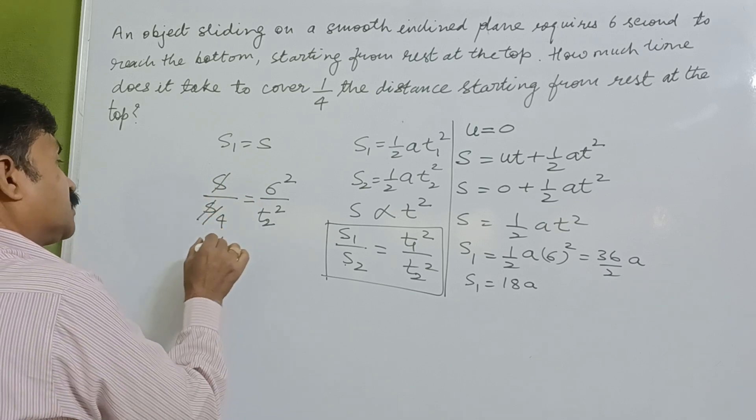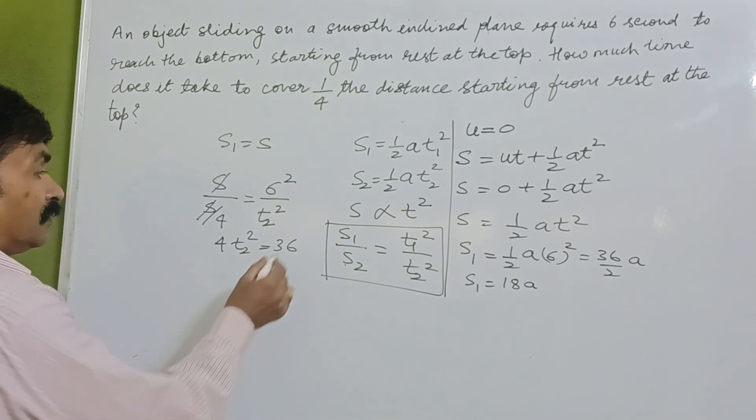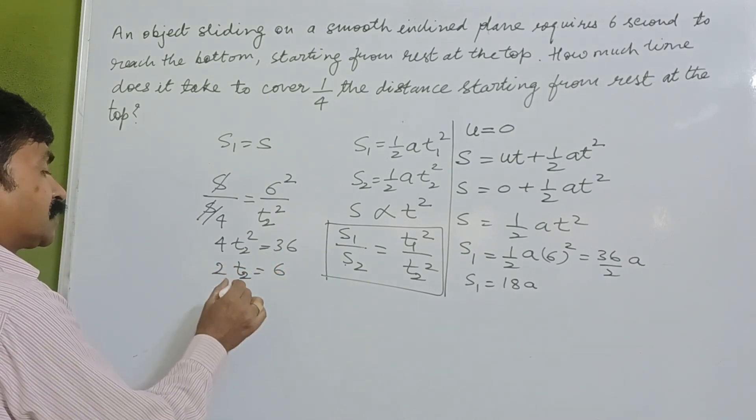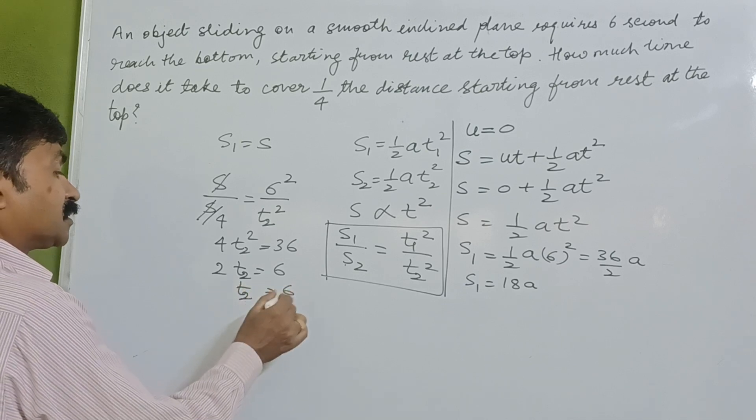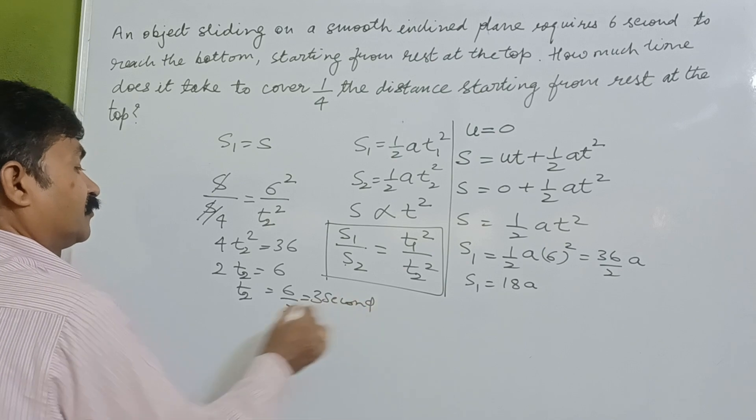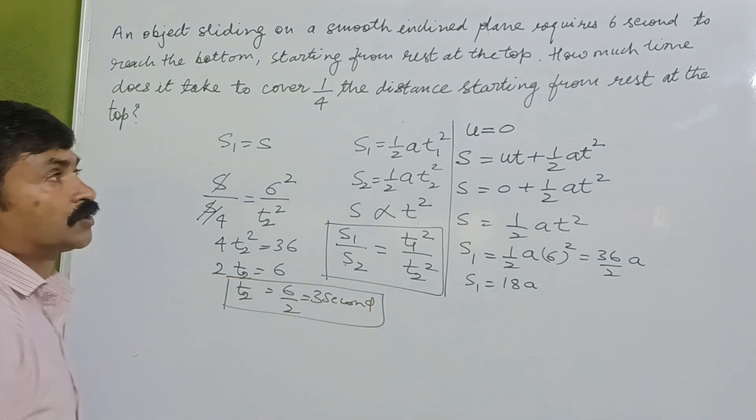So s/4 divided by s equals t2²/36. Solving this, t2² equals 9, so t2 equals 3 seconds. Three seconds will be the correct answer for this, to reach at the bottom from rest.